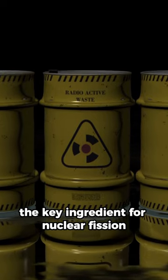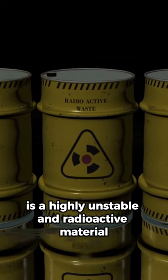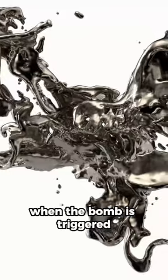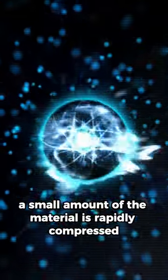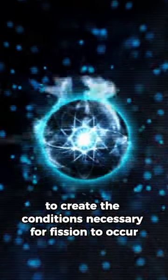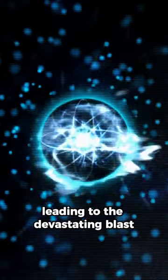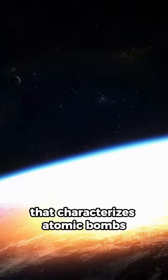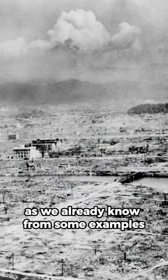The key ingredient for nuclear fission is a highly unstable and radioactive material, such as uranium or plutonium. When the bomb is triggered, a small amount of the material is rapidly compressed to create the conditions necessary for fission to occur, leading to the devastating blast that characterizes atomic bombs, as we already know from some examples.